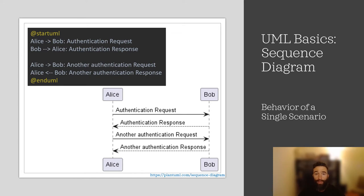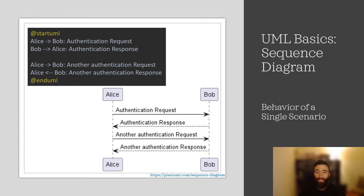We start with a sequence diagram. It is the most common type of interaction diagram, which describes how groups of objects collaborate in some behavior, typically the behavior of a single scenario. The diagram shows Alice sending Bob an authentication request, then Bob responds with an authentication response. Use sequence diagrams when you want to look at the behavior of several objects within a single use case. Sequence diagrams are good at showing collaborations among the objects.